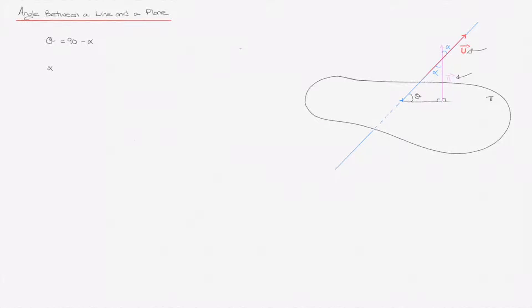We know that alpha is equal to arccos of the absolute value of u dot n over the product of the magnitudes of the vectors u and n. Notice that I'm taking the absolute value here. The reason for that is to make sure that I'm obtaining the acute angle between the two vectors and not the obtuse angle. That's why we're taking the absolute value.